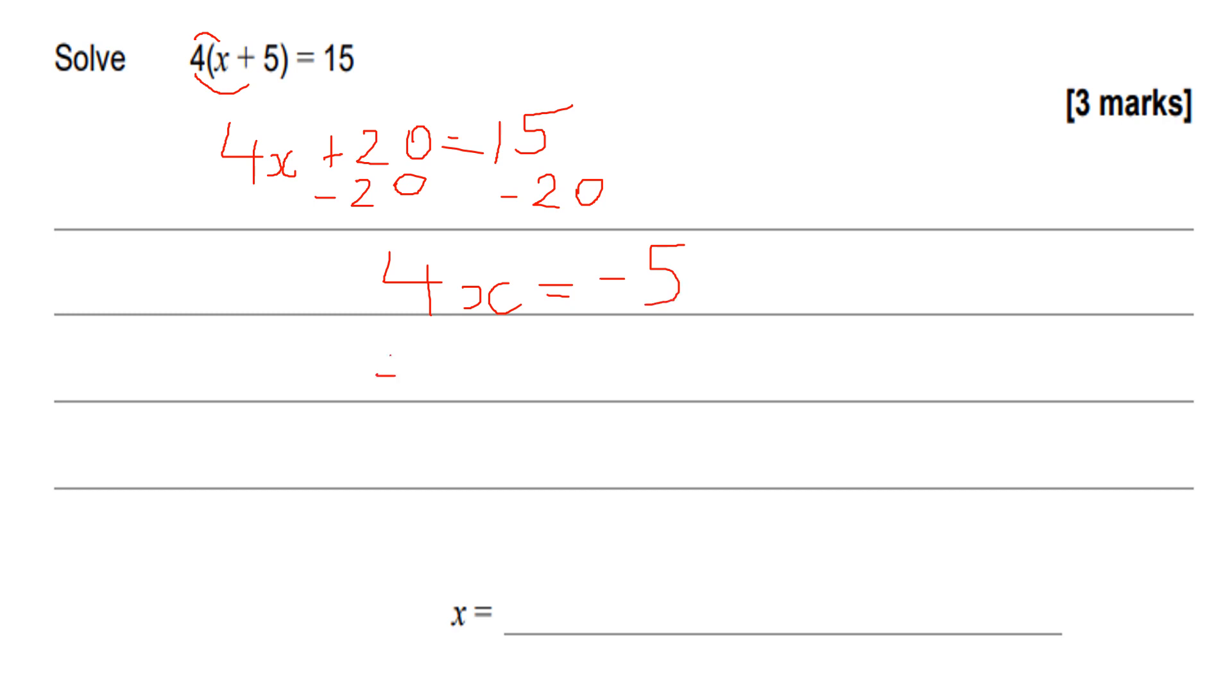And then dividing both sides through by 4, we get that x is equal to minus 5 quarters. And that would be our final answer. So I can leave it like that or write it as minus 1 and a quarter or minus 1.25.